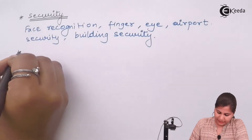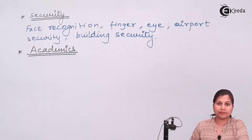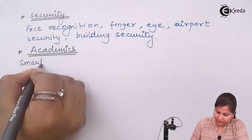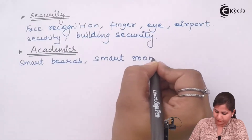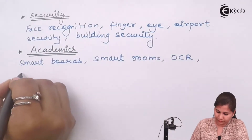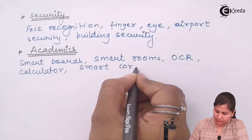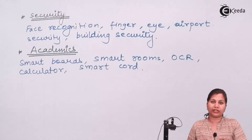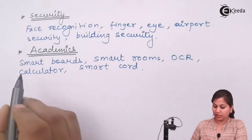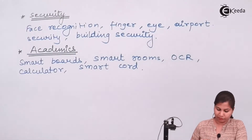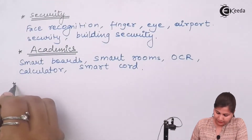In academics, embedded systems are also used. Examples include smart boards, smart rooms, OCR, calculator, and smart core. In academics, you can see that embedded systems are used in smart boards, smart rooms, OCR, calculators, and smart code — all are examples of embedded systems.